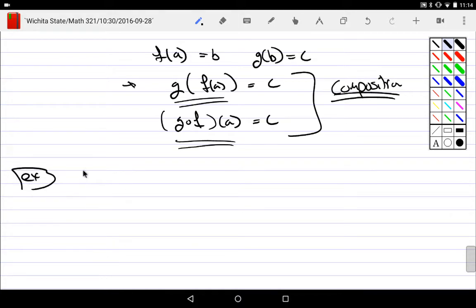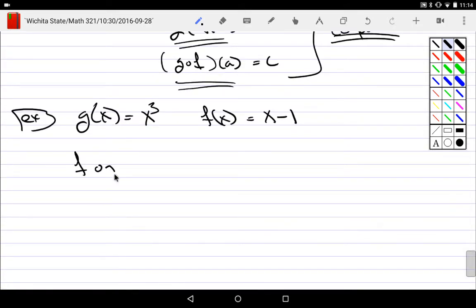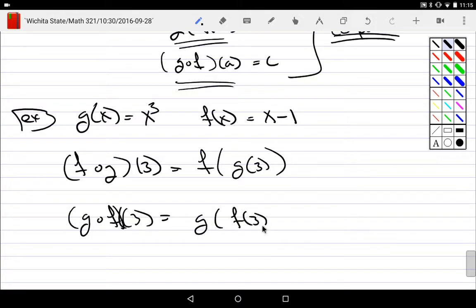So example. What if I told you that G of X is equal to X cubed, F of X is equal to X minus 1. What would F compose with G of 3 be? And what would G compose with F of 3 be? The easiest way to do this is to not use this notation. Use this notation. Don't use this. Use this. And then do inside out.